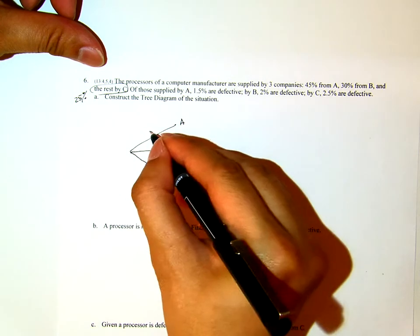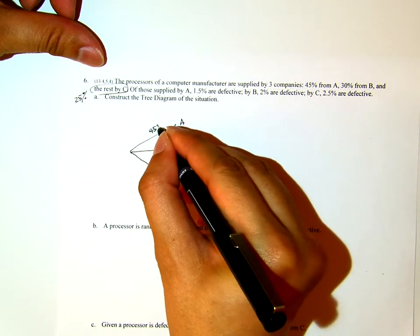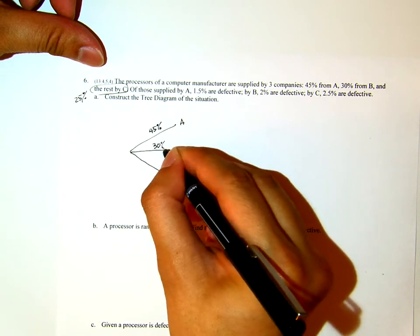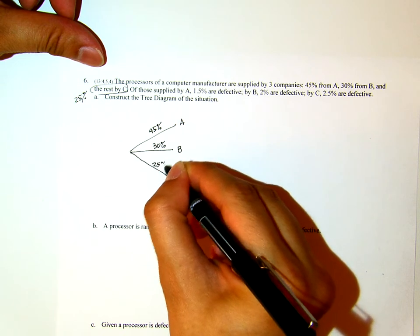Company A, from the information there, 45% of them coming from A, supplied by A, 30% supplied by B, and therefore the rest, 25% is by C.